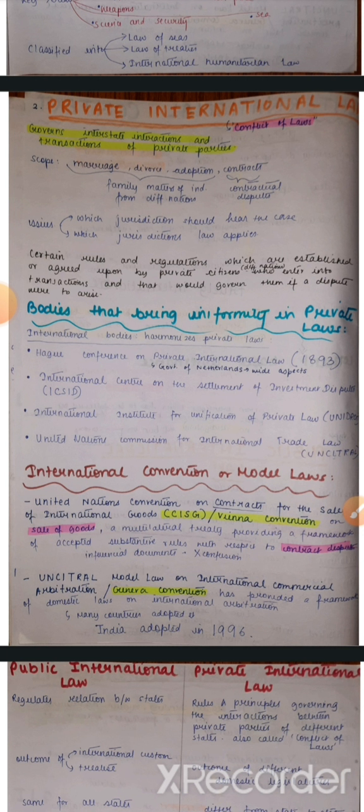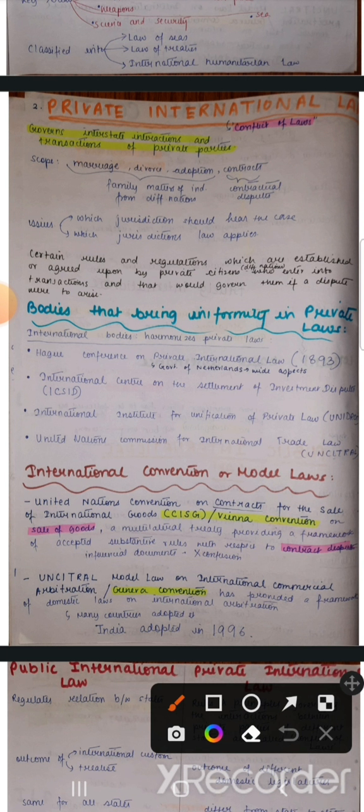The Hague Conference on Private International Law, which was convened by the government of Netherlands in 1893, settles a wide range of aspects — kaafi saare different cheezon ko ye settle karta hai.